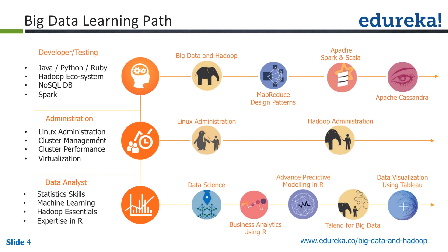If you are a developer looking to get into the big data world, the skills you'll require include programming languages such as Java, Python, Ruby, or Perl. Hadoop is language-agnostic but is written in Java, so a lot of MapReduce design is done in Java and Python. If you're comfortable with any of these languages, you should be good to go. You should also understand the Hadoop ecosystem — the various tools that are a part of it.